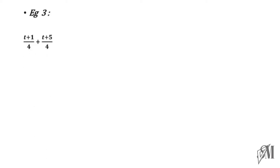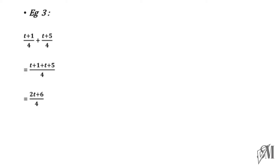The third example: (t + 1) over 4 plus (t + 5) over 4. This is somewhat different because the numerator is an algebraic expression. Since it is addition with the same denominator, we write everything together. t plus t is 2t, and 1 plus 5 is 6, so the answer is 2t plus 6 over 4.